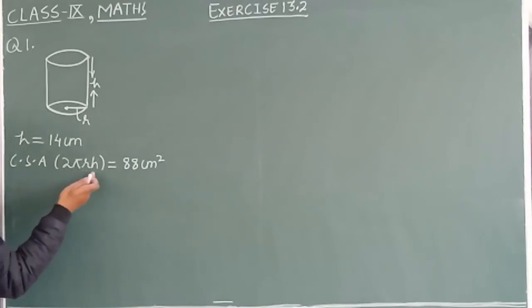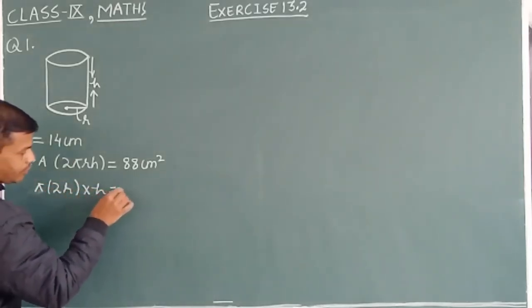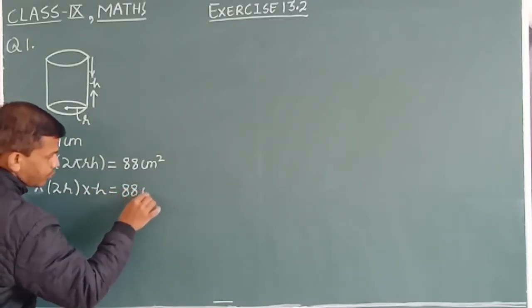So as 2 pi r h equals to 88 centimeter square, so this would be written as pi into 2r into h equals to 88 square centimeter.